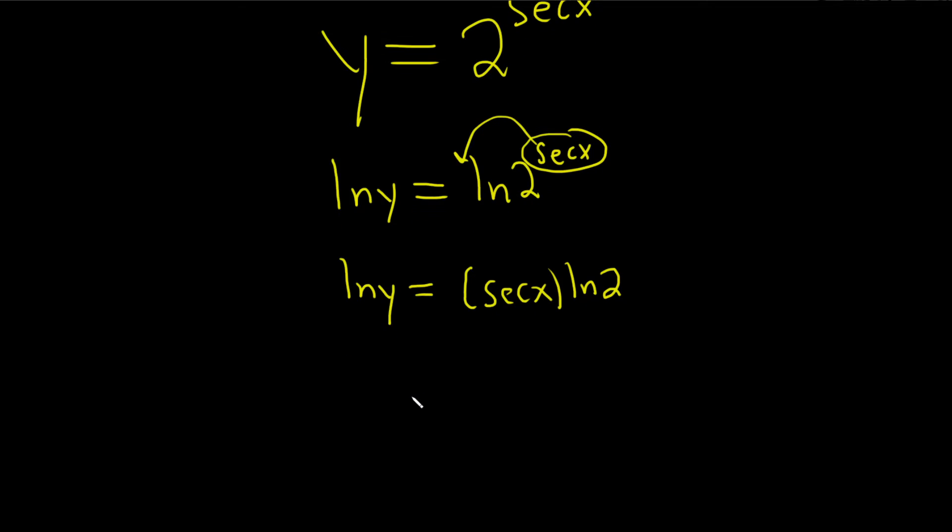And now we just go ahead and take the derivative of both sides. So on the left-hand side, taking the derivative with respect to x, we get 1 over y times the derivative of the inside, which is simply dy dx. That's equal to—well here, the natural log of 2 is a constant, so it hangs out. So we simply take the derivative of secant, which is secant tangent. So we get secant x, tangent of x, and then the natural log of 2 is a constant, so it just kind of stays there.